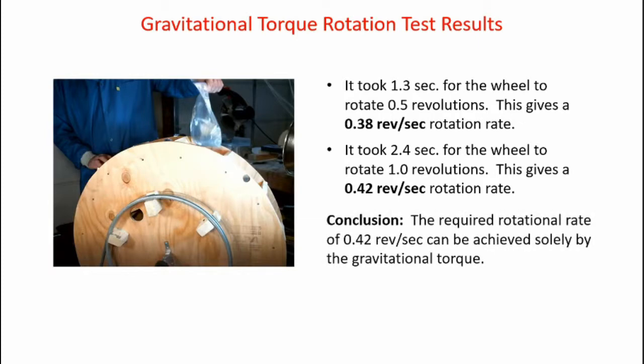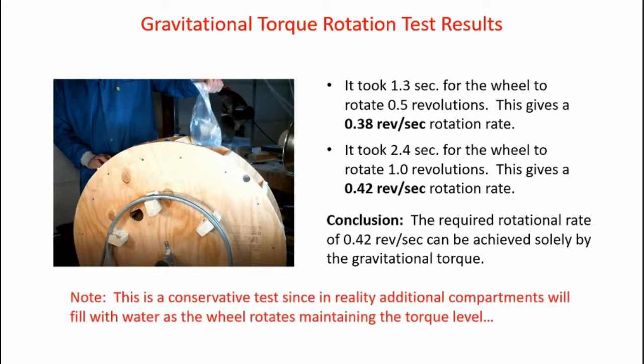In conclusion, the required rotation rate of 0.42 revolutions per second can be achieved solely by the gravitational torque. Note this is a conservative test since in reality additional compartments will fill with water as the wheel rotates, maintaining the torque level.